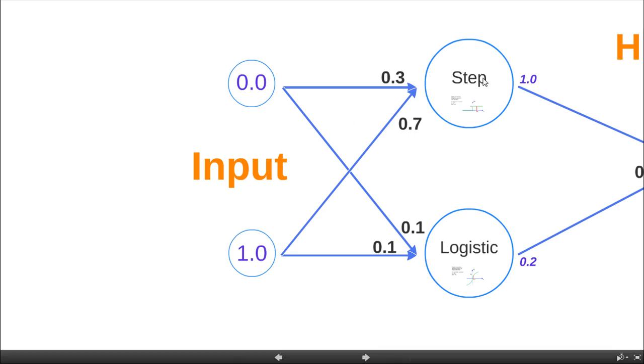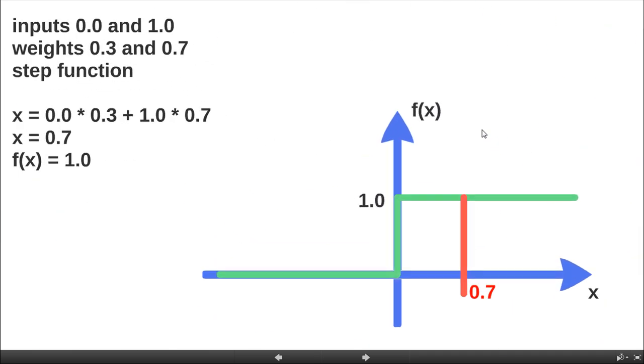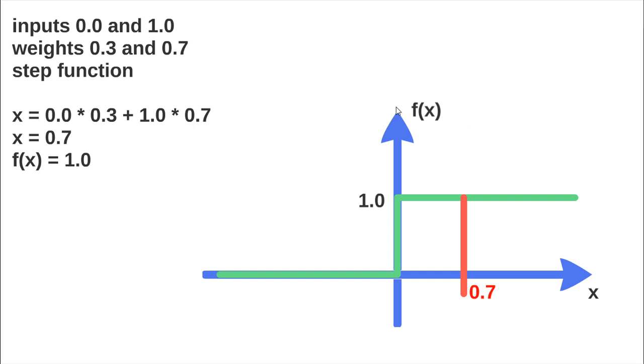Let's see how to propagate this neuron in the first step and this neuron in the second step. This neuron is connected with the inputs zero and one, and the weights 0.3 and 0.7. It is important to state that it is a step function.